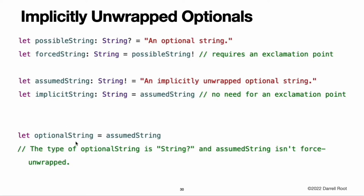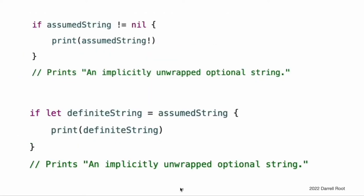In the code below, optionalString does not have an explicit type, so it is an ordinary optional. If an implicitly unwrapped optional is nil and you try to access its wrapped value, you will trigger a runtime error — the result is exactly the same as if you place an exclamation point after a normal optional that does not contain a value. You can check whether an implicitly unwrapped optional is nil the same way you check a normal optional. You can also use an implicitly unwrapped optional with optional binding to check and unwrap its value in a single statement. Do not use an implicitly unwrapped optional when there is a possibility of a variable becoming nil at a later point. Always use a normal optional type if you need to check for a nil value during the lifetime of a variable.